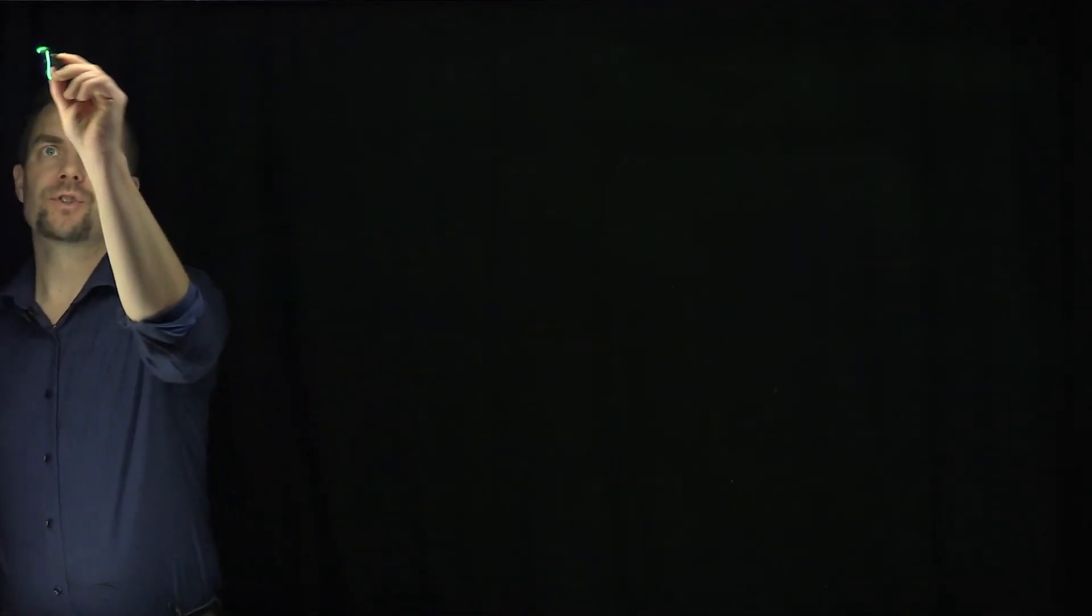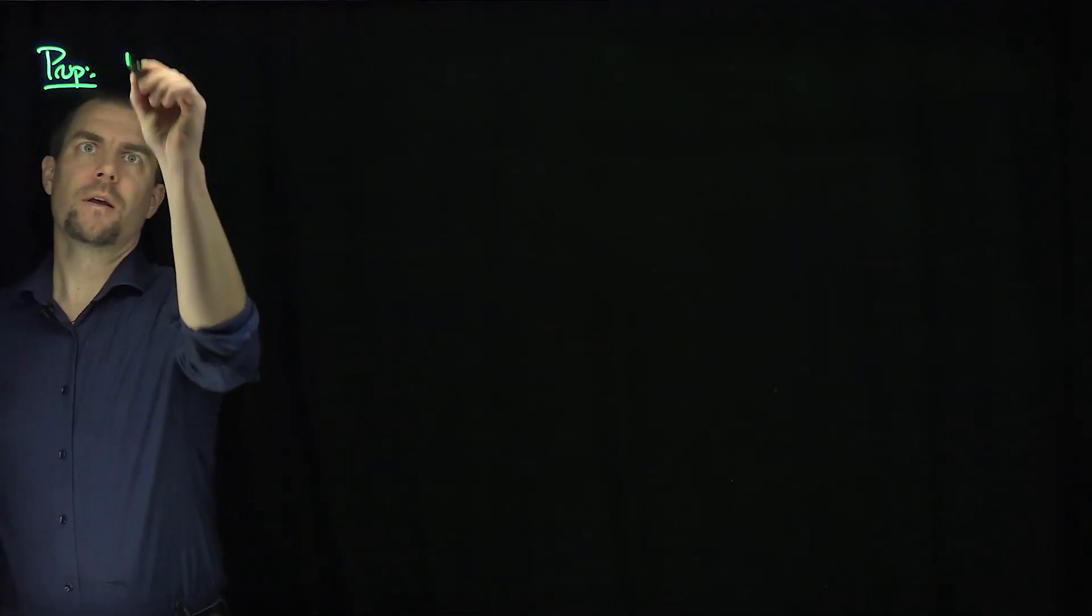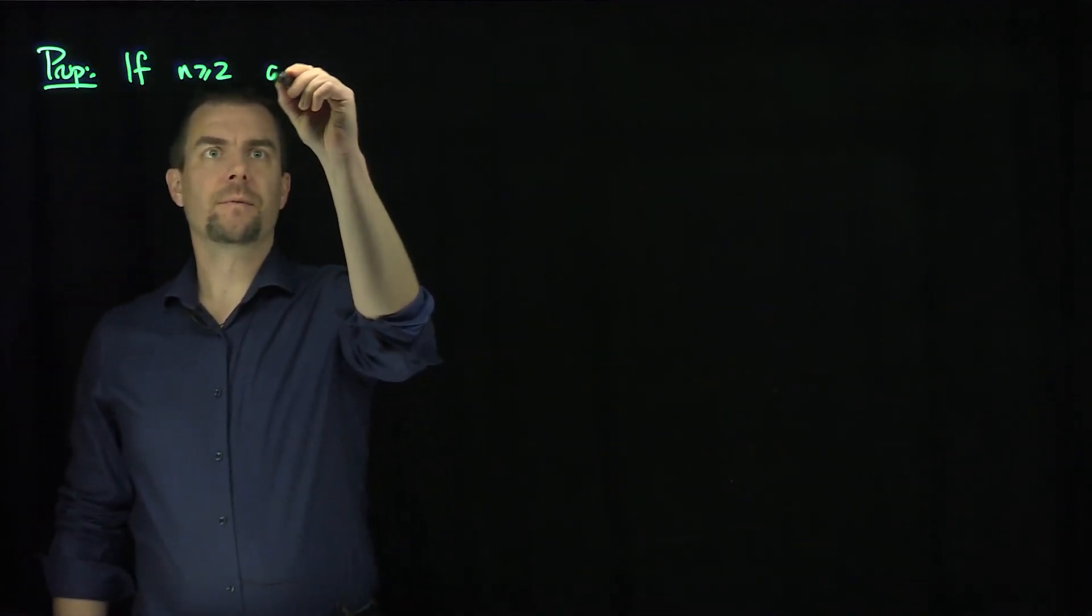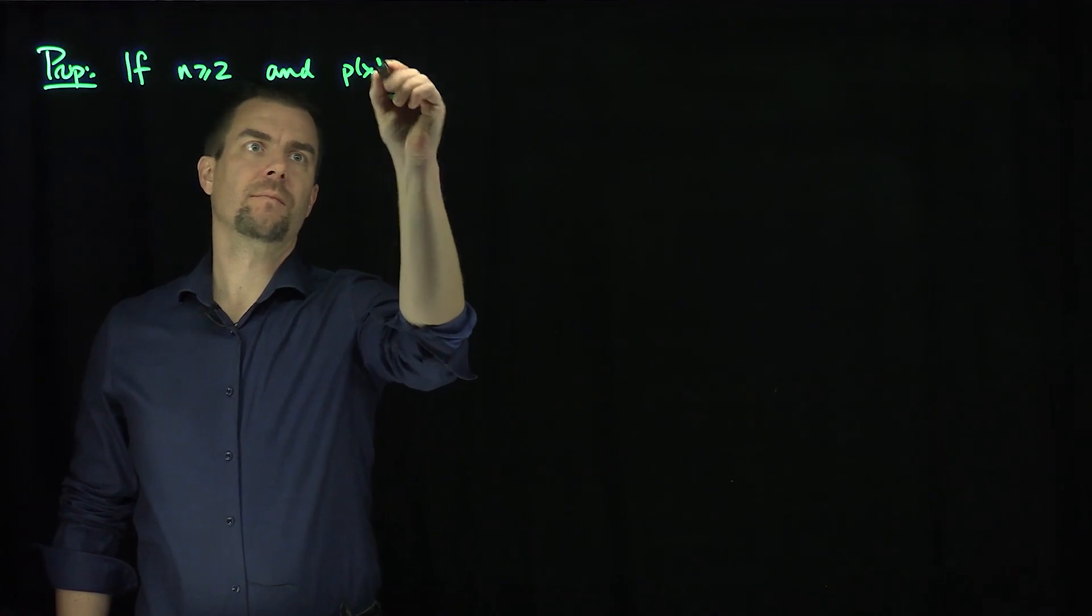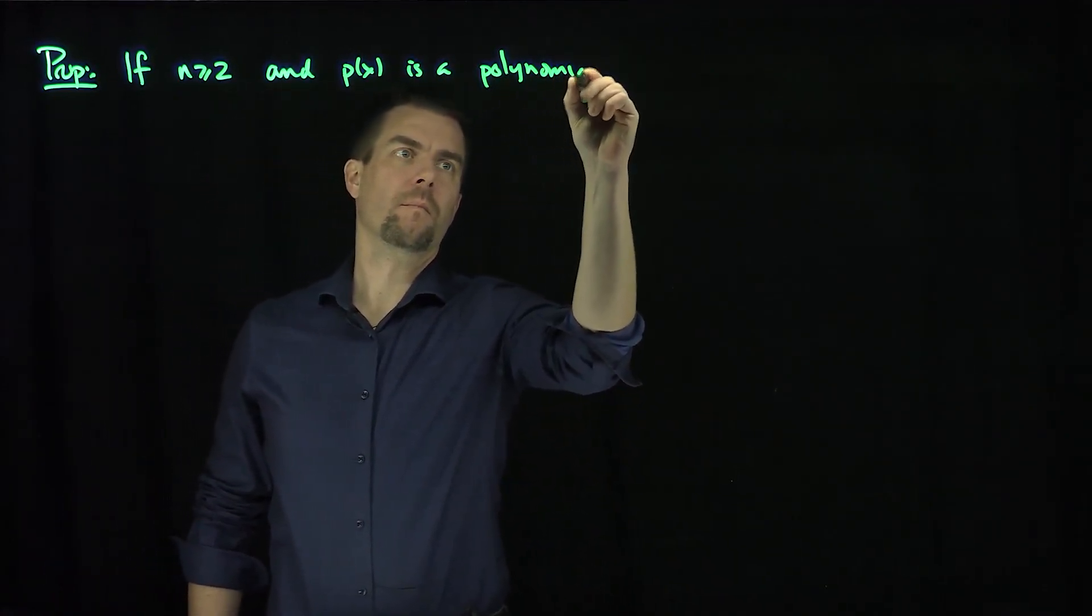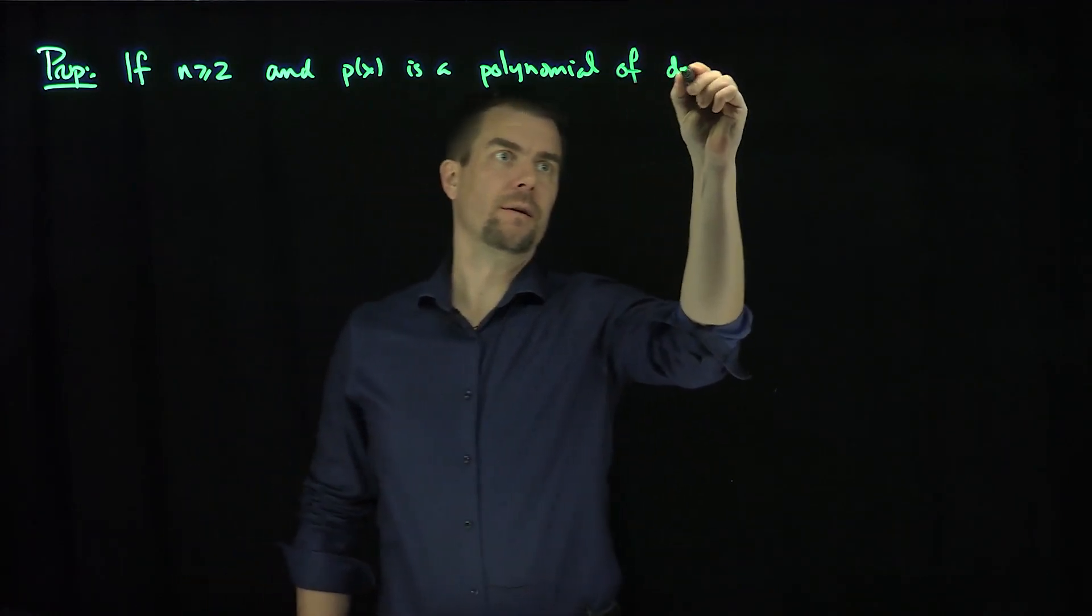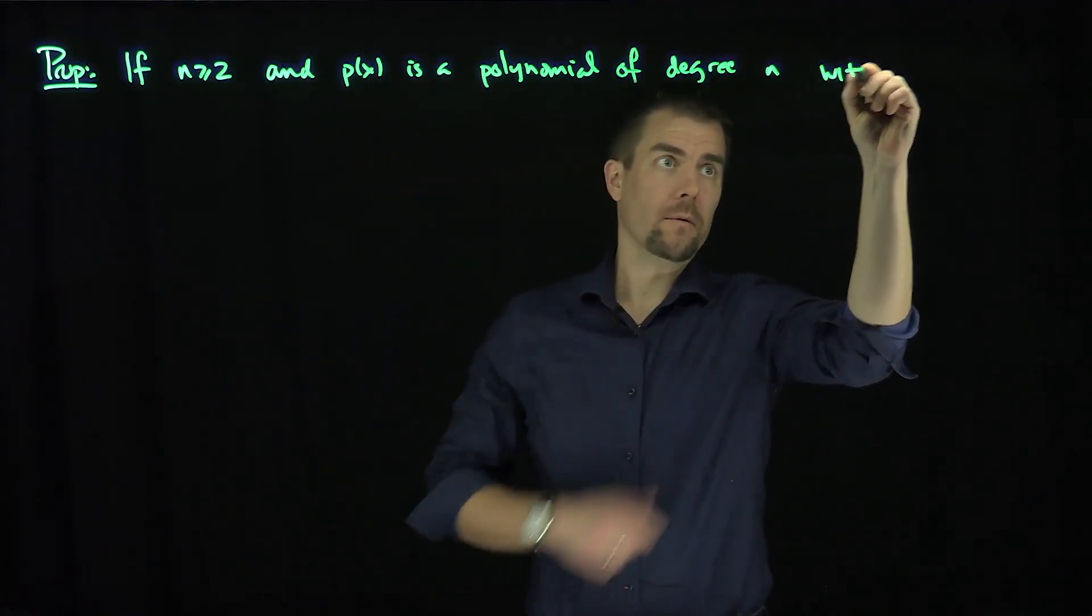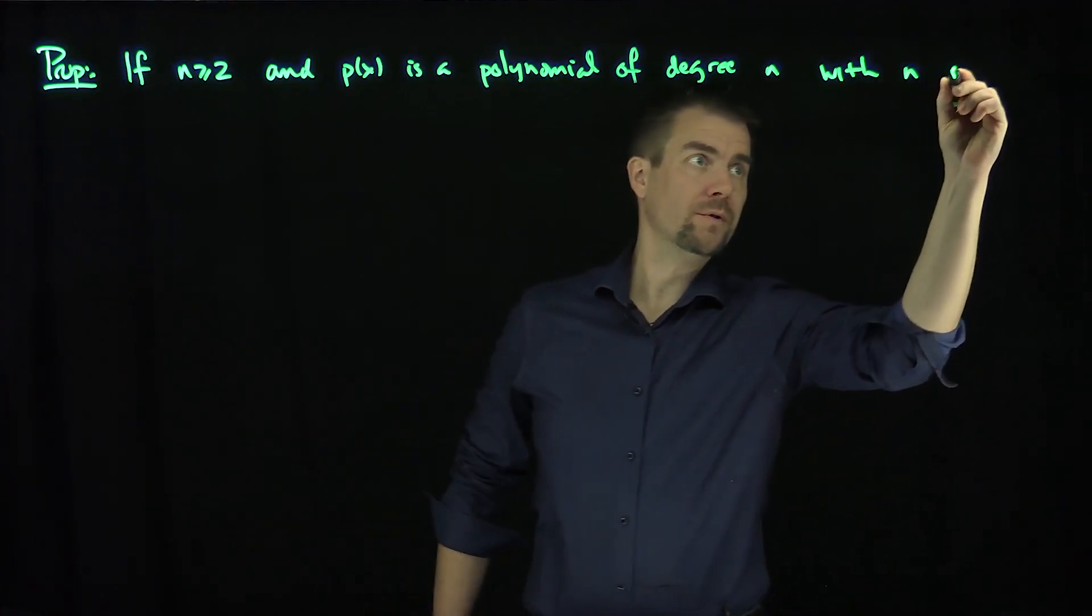Here's our result. Proposition: if n is greater than or equal to 2 and p(x) is a polynomial of degree n with n real roots,